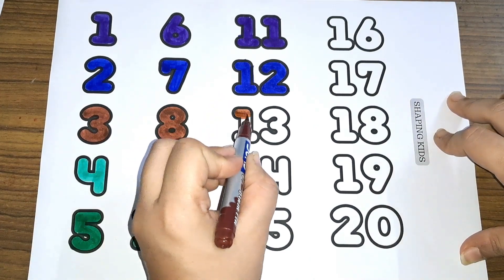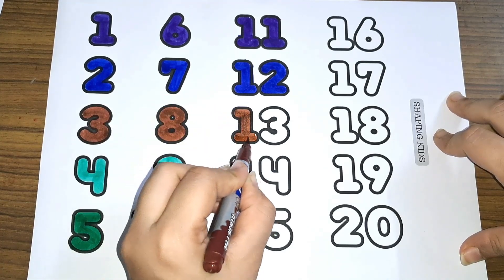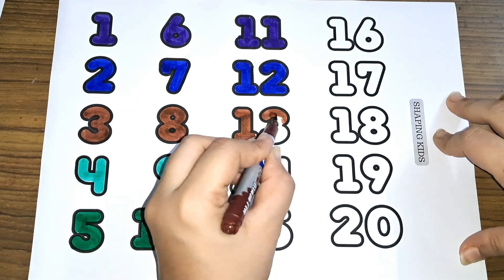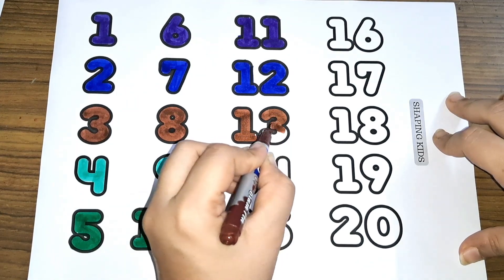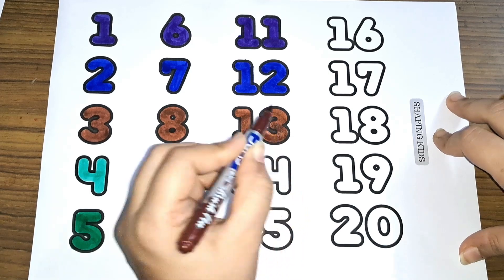Thirteen. One and three, thirteen. One, three, thirteen. Number thirteen.